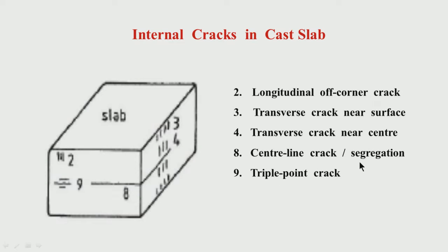Now let us look at centerline crack or segregation. Taking a section and looking at the center, you may have cracks and a lot of segregation. Sometimes they are combined together; sometimes separately you can have a crack but segregation is almost always present. You will have cracks if you have relatively bad casting, then you have a relatively coarse cast structure. If your superheat was high, the columnar zone extends from the surface to the center — then you have cracks and a lot of segregation: a bad central area.